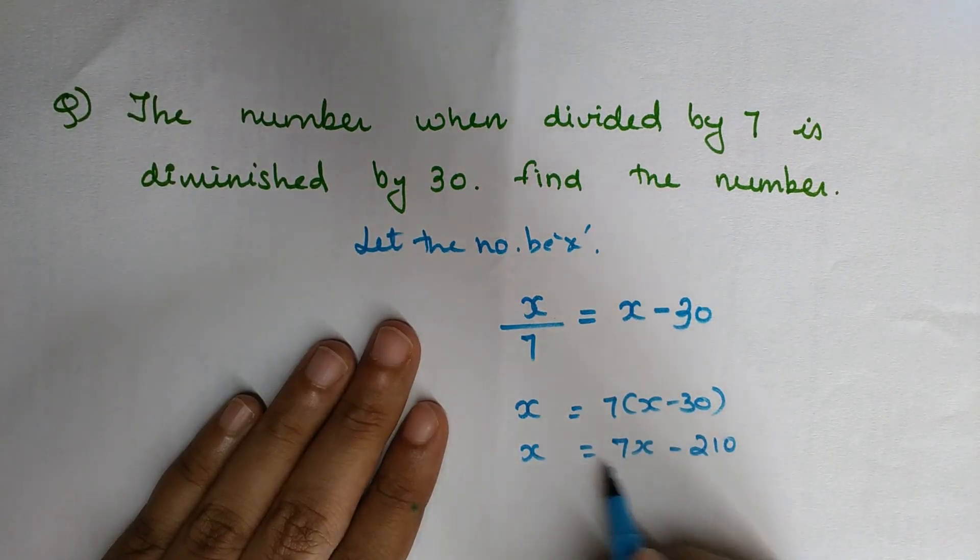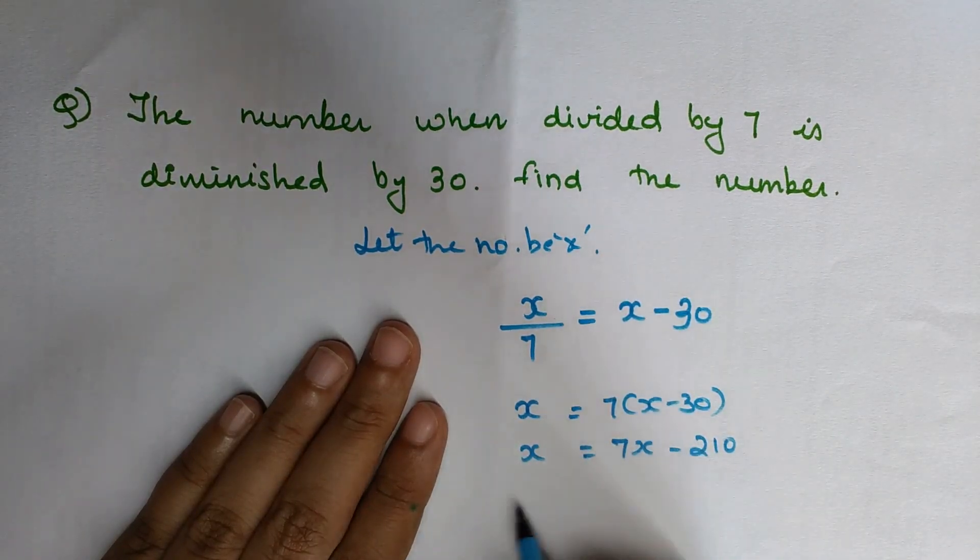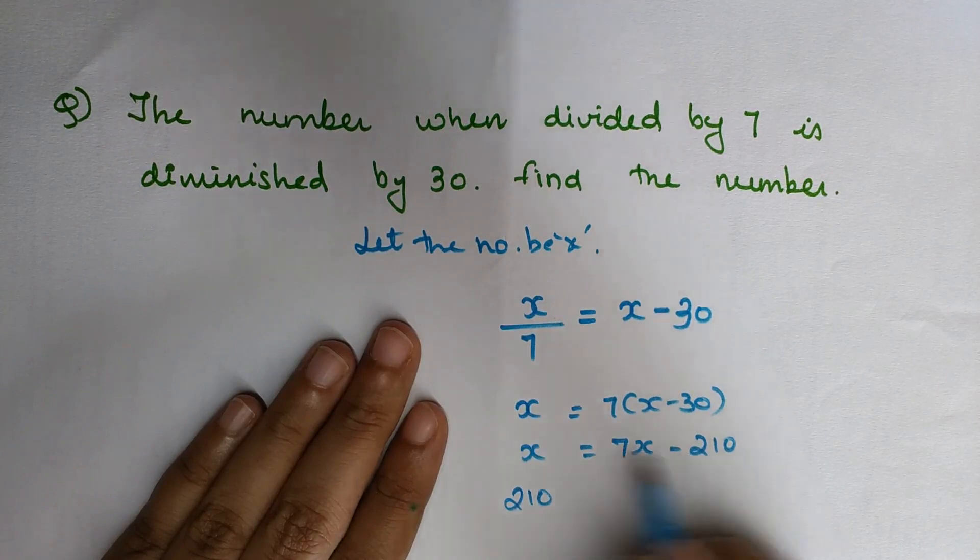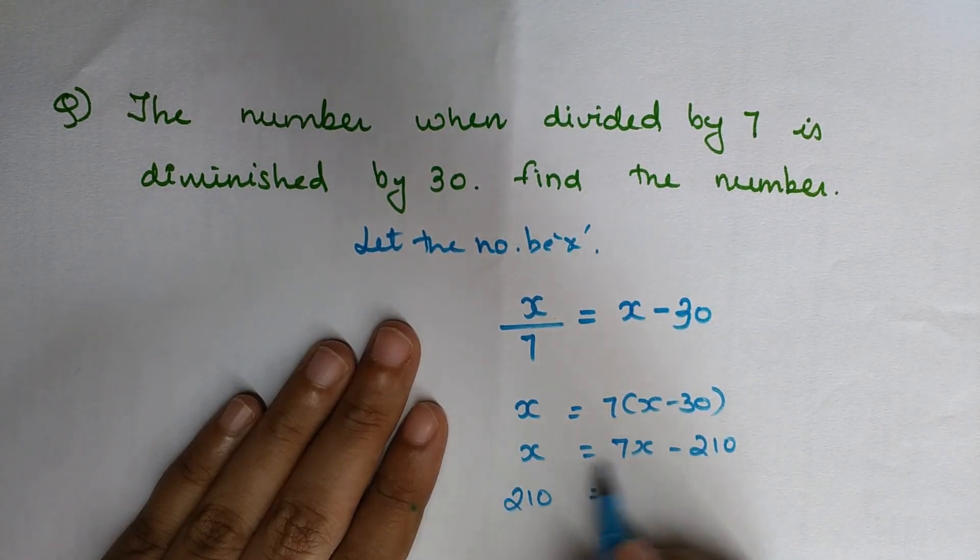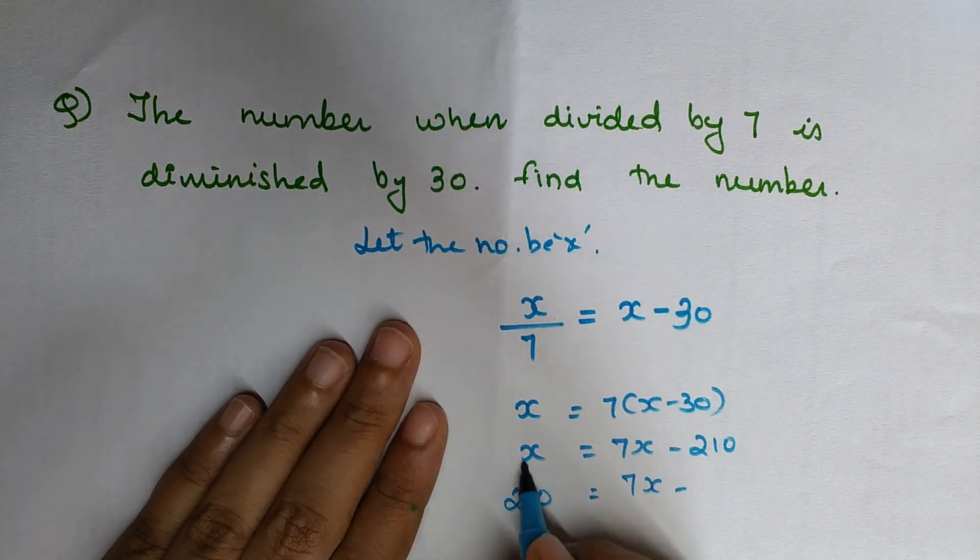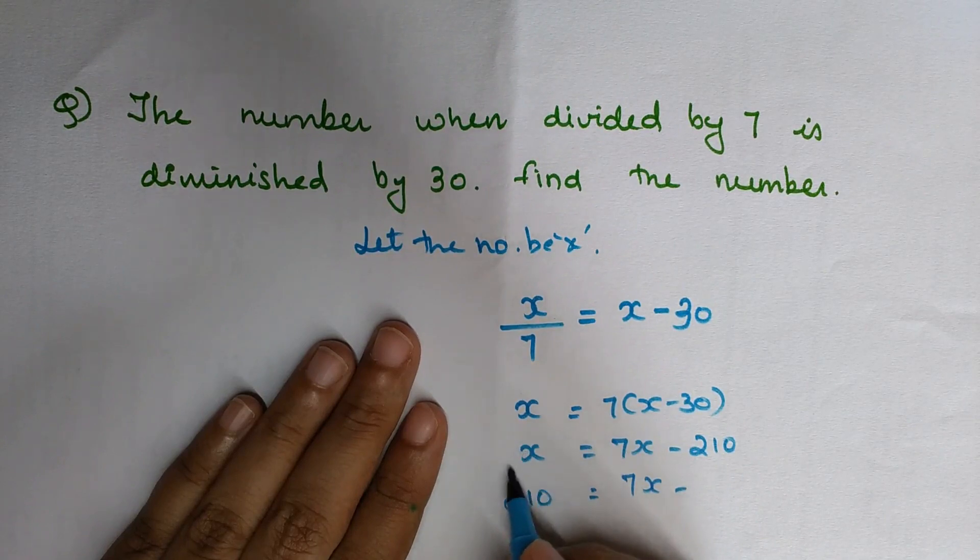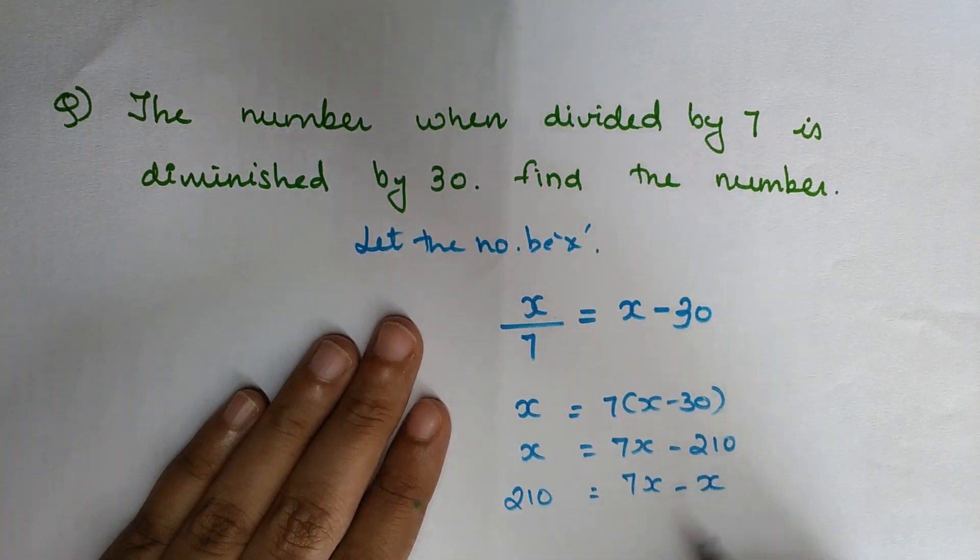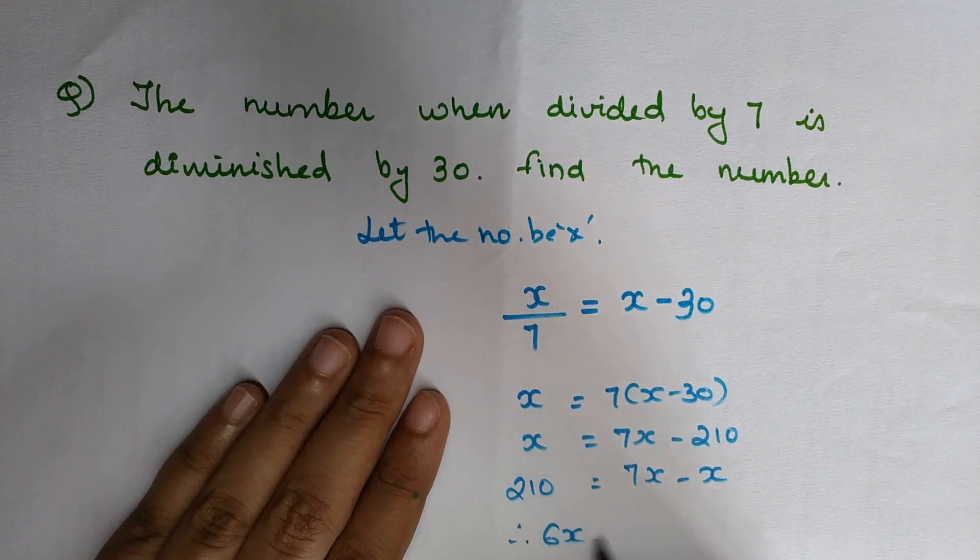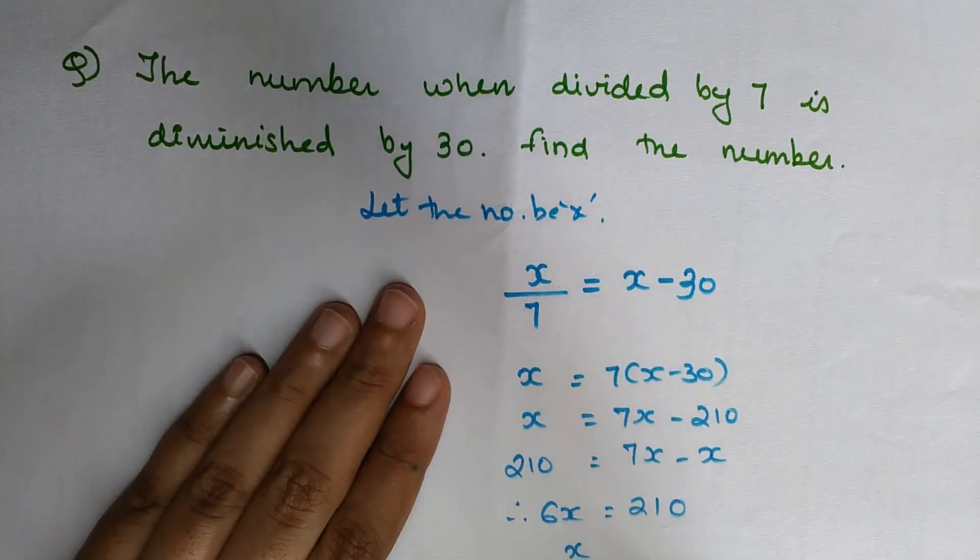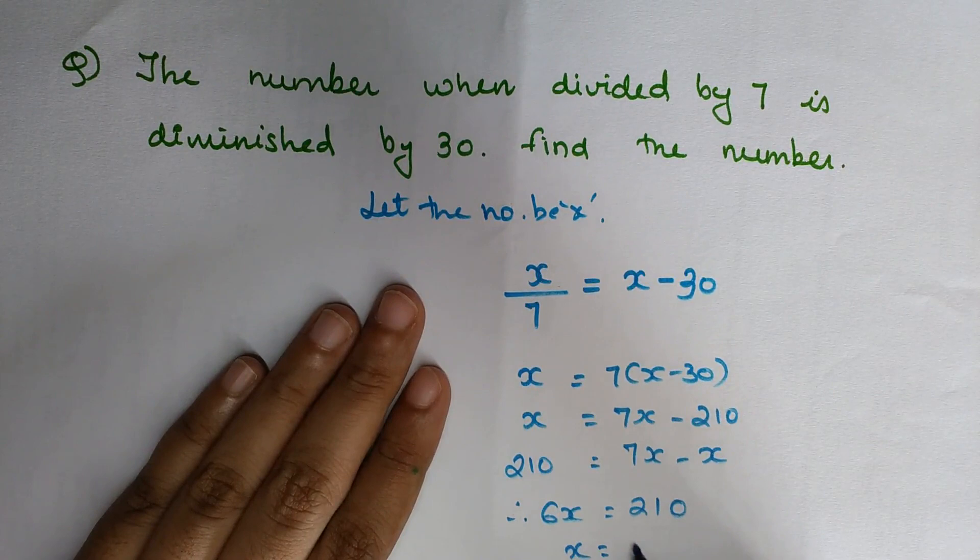Now let's take 210 to this side and x to the other side. 210 was negative, so coming to this side it becomes positive. And 7x minus x gives you 6x. Therefore, 6x = 210. Dividing both sides by 6...